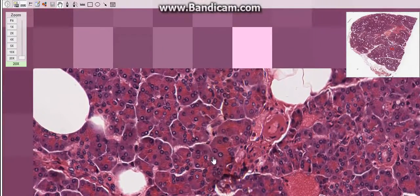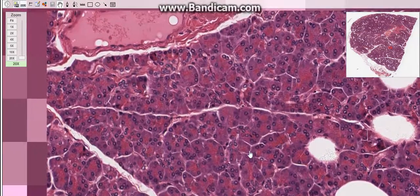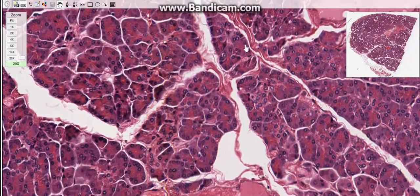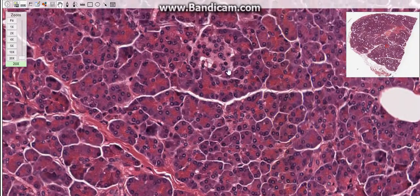PP cells secrete the hormone pancreatic polypeptide, that is PP. That is where the name came from, the PP cells, because they produce the pancreatic polypeptide. This polypeptide stimulates chief cells in gastric glands and inhibits bile and bicarbonate secretion.